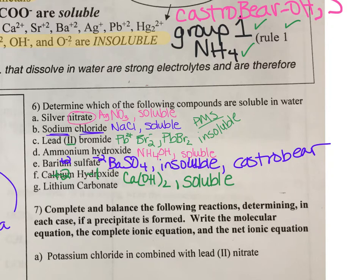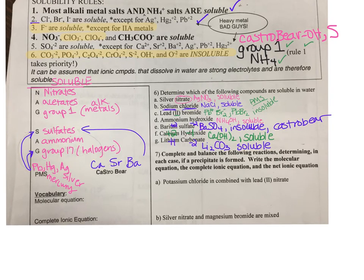Calcium hydroxide. Calcium has a plus two charge, hydroxide has a minus one, so Ca(OH)2. This is the reverse Castro Bear. So it is a hydroxide. Hydroxides are always insoluble unless they're with ammonium, group one, or Castro Bear. Is it with Castro Bear? Yes. So is it soluble? Yes. Lithium carbonate, Li2CO3. Soluble. It's a group one with your carbonate.